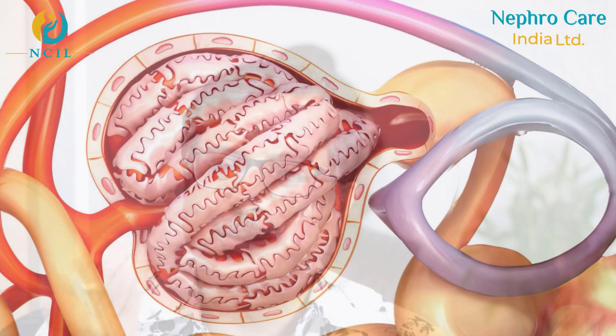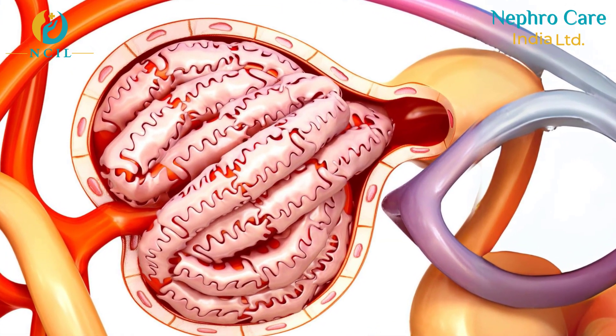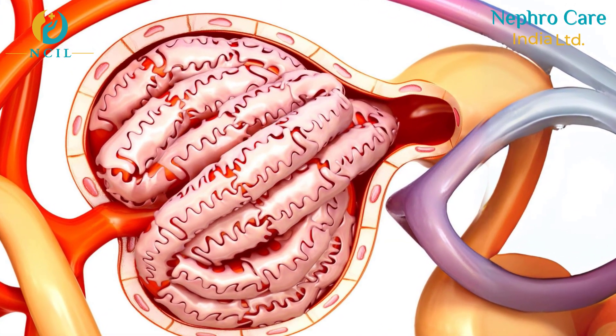Let's say that the kidney contains structures called the glomerulus. The glomerulus is very small. There are arteries, veins, and small blood vessels used within it.